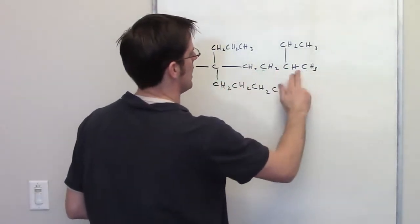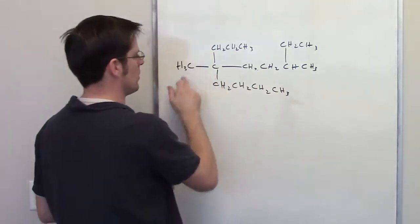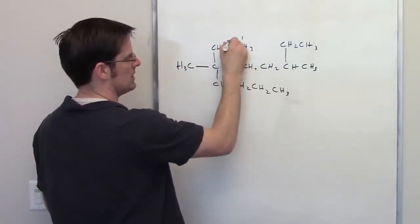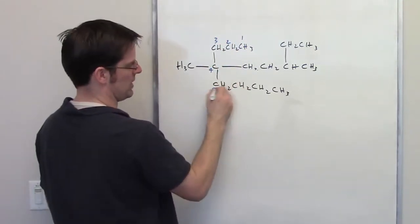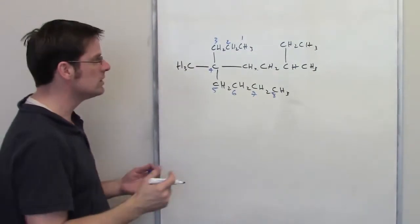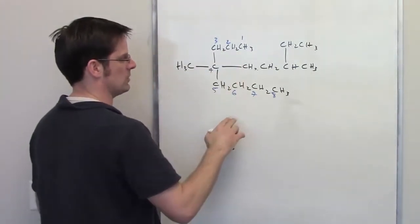For example, that's a 6 carbon long chain just going horizontally across. I might try going up here, 1, 2, 3, 4, and then going down here, 5, 6, 7, 8. That's 8 carbons long, that's longer, so that would be a possible direction.